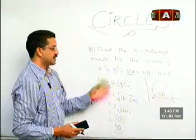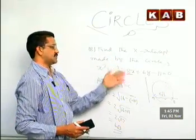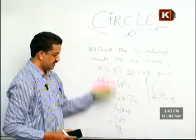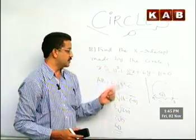6√3 is the x-intercept. Please. It is a good question. Find the x-intercept made by the circle x² + y² + 8x + 6y - 11 = 0. And you can see all the steps here.